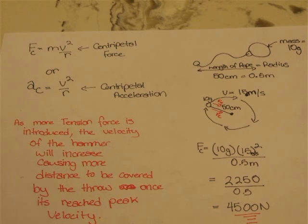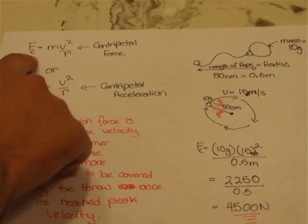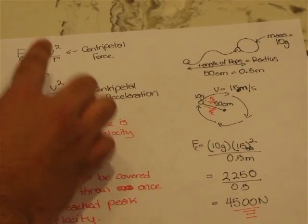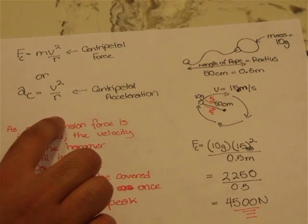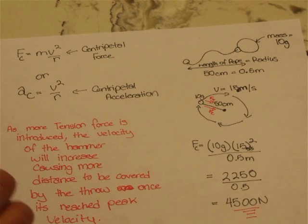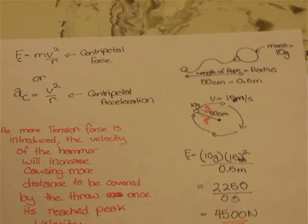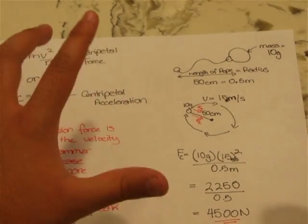The hammer throw can be measured with the centripetal force equation Fc equals mv squared over r, or Ac equals v squared over r for centripetal acceleration. So let's do a sample equation.